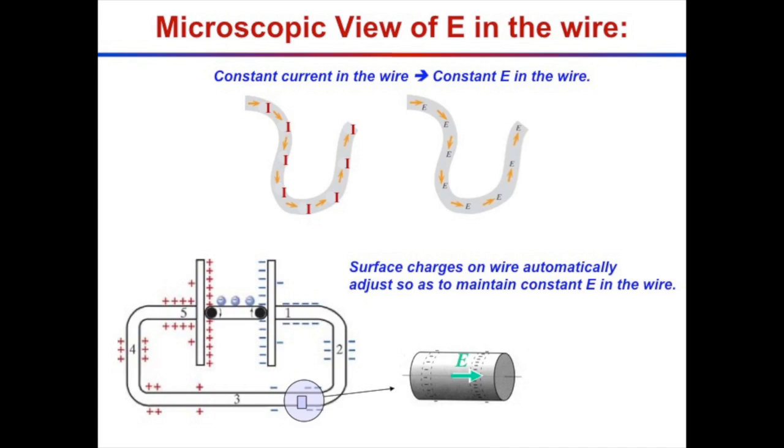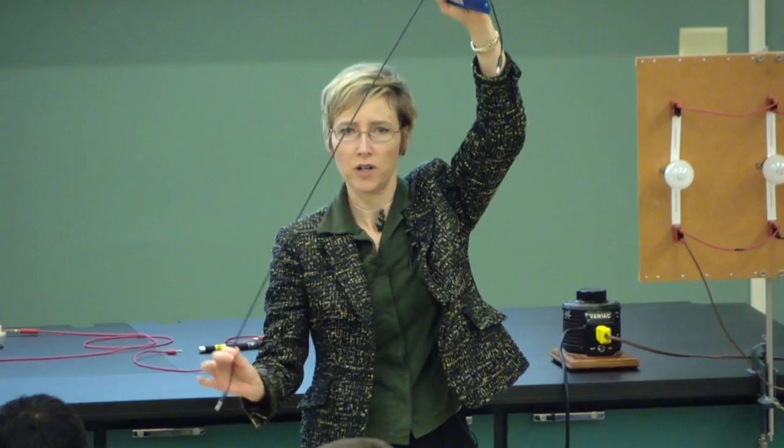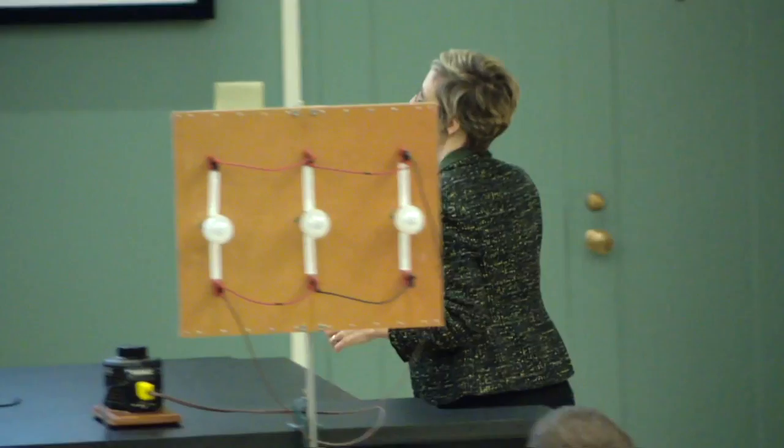Electric fields are generated by charges — there must be some net charge somewhere exerting an electric field. This is a bit of an odd-shaped electric field, and not only is it odd-shaped, it can change shape as you move the wire. What this means is that as I change the shape of the wire in a circuit, it just automatically responds. To create that kind of electric field, there must be charges on the surface of the wire.